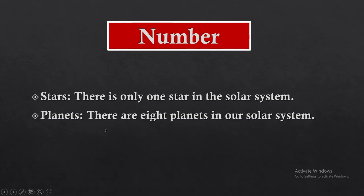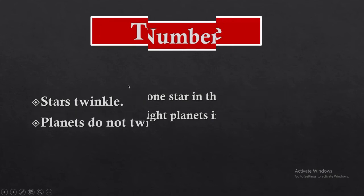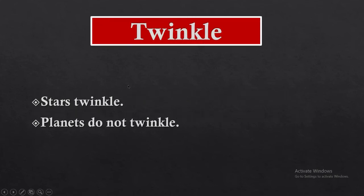Regarding number: there is only one star in the solar system, and that is the Sun. There are eight planets in our solar system: Mercury, Venus, Earth, Mars, Jupiter, Saturn, Uranus, and Neptune.